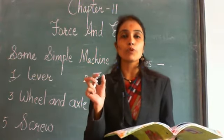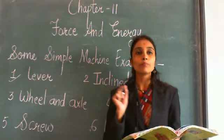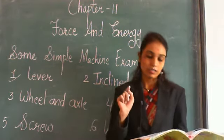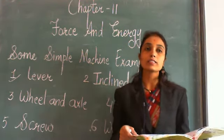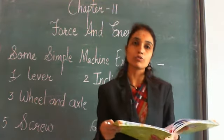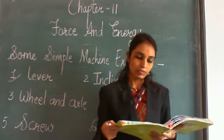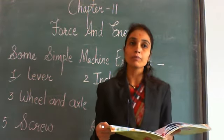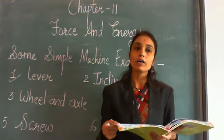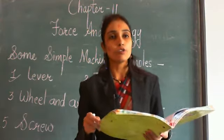A lever has three parts: fulcrum, load, and effort. Fulcrum is a fixed point about which the rod moves. Load is the object that has to be moved. Effort is the force that we apply on the rod to do a job.